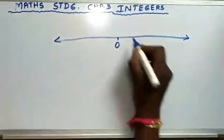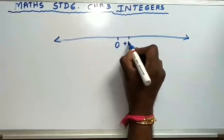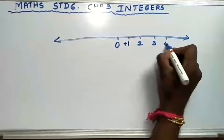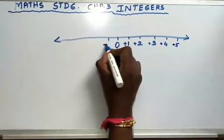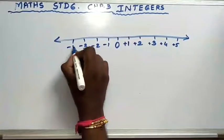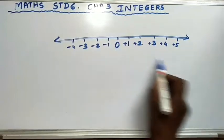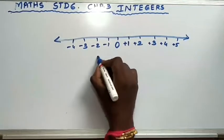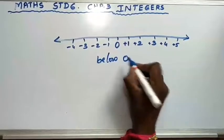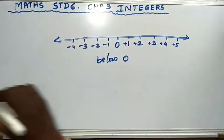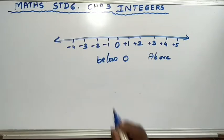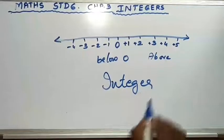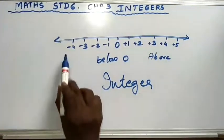In the middle I will write 0. On the right side: 1, meaning plus 1, then 2, 3, 4, 5 and so on — so plus 1, plus 2, plus 3. On the left side: minus 1, minus 2, minus 3, minus 4 and so on. So these numbers are called integers. Below 0 is minus 1, minus 2, minus 3, minus 4 and goes on. Above 0 is plus 1, plus 2, plus 3, plus 4 and it goes on. These are the numbers which we call integers.